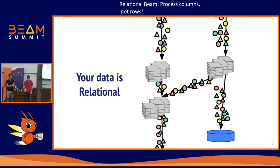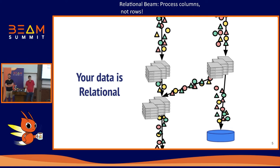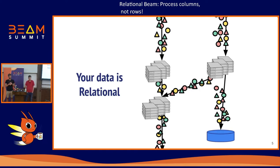It turns out your data is relational — it has structure, it has a schema, sometimes it has order. Our traditional Beam APIs aren't equipped to take advantage of that. We don't have that information at runtime or at pipeline expansion time. To do that, we need a few things in the SDK. First, we need to know about the structure of your data — what is that byte array? This is really where Beam schemas come in. What columns do you have, what are their names and types, and how much data can we expect from a collection? Second, we need metadata about your computations — what columns are you accessing, what transforms are you performing?